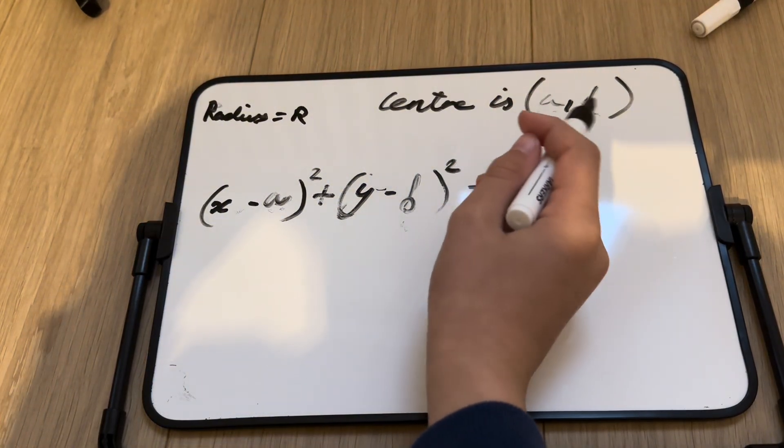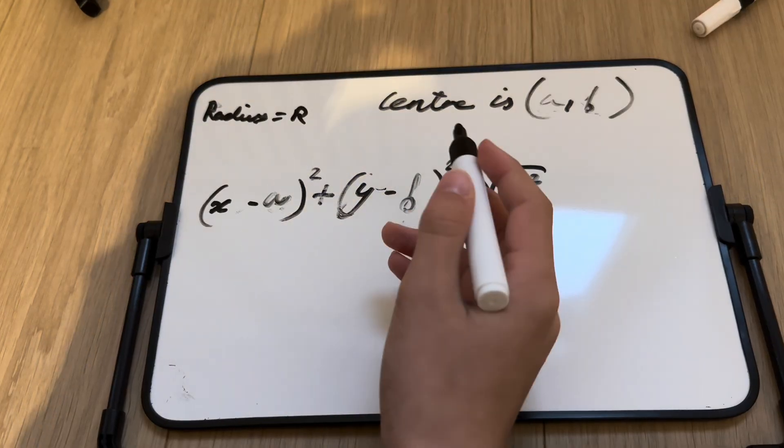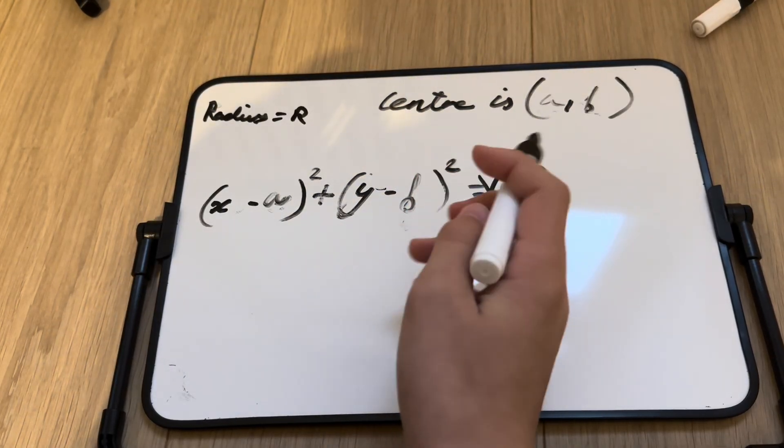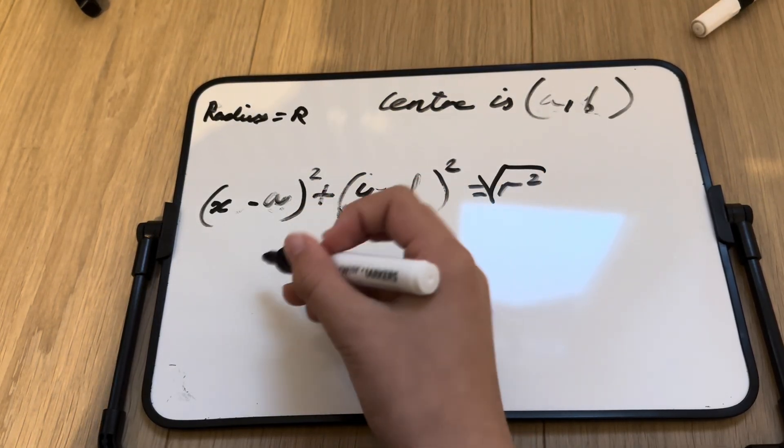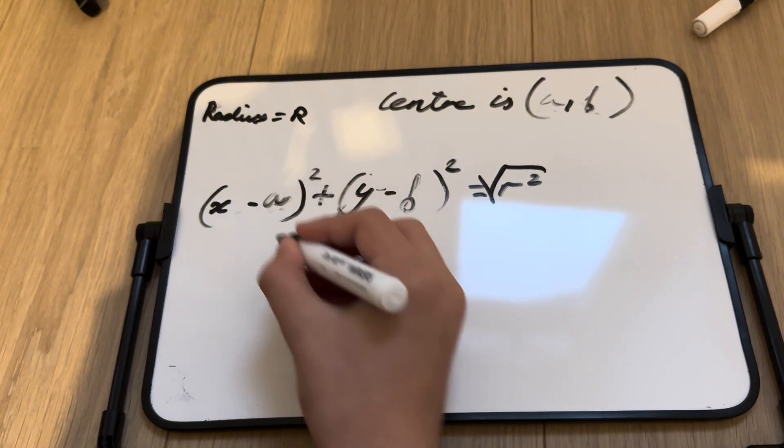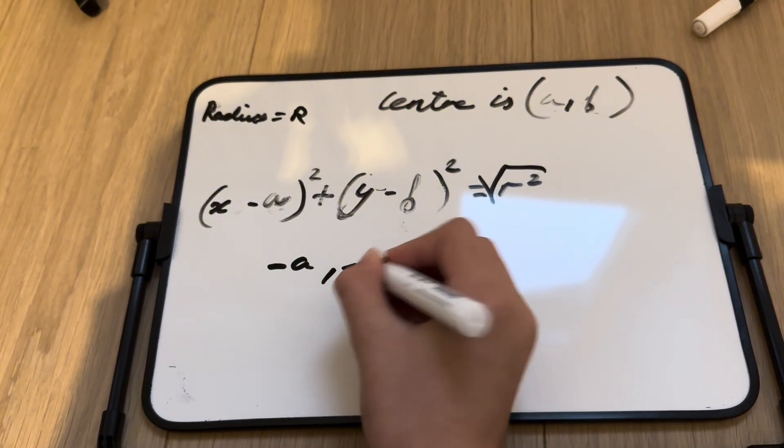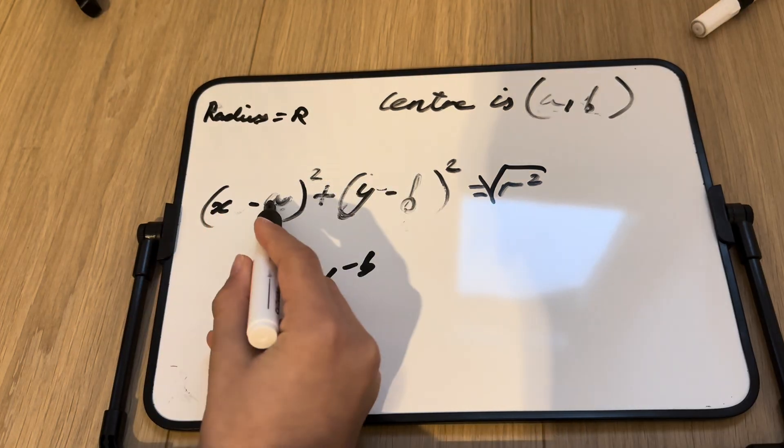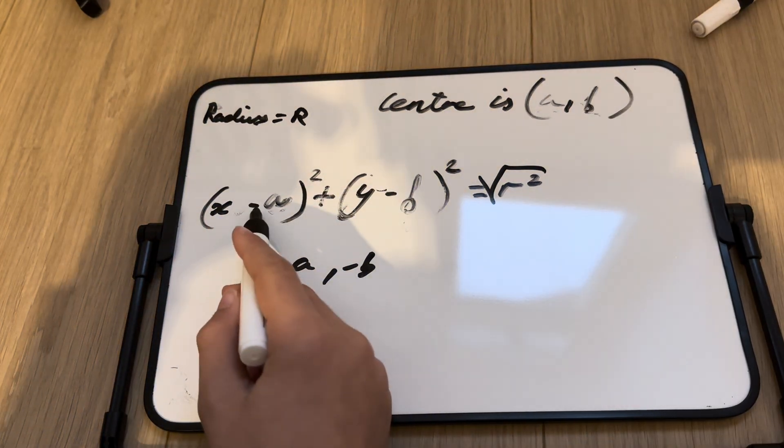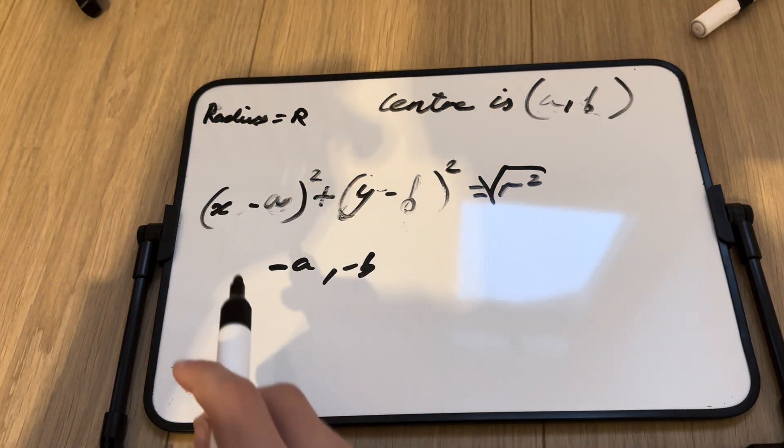And since the center is a comma b, to find the center, we can just make it, since it's negative here, we can just make it negative a comma negative b is the solution which we can derive from here, since it's negative and the two negatives would cancel out.